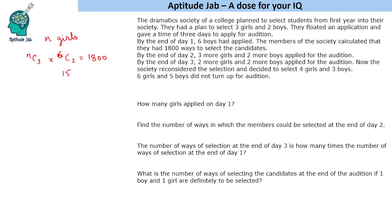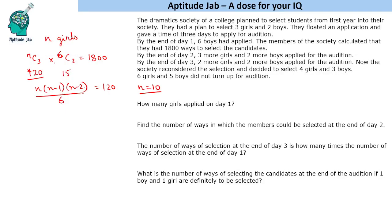6C2 is 15, so nC3 will be 120. nC3 is n(n−1)(n−2)/6 = 120, so n(n−1)(n−2) = 720. You will get n = 10. So the first question asks how many girls applied on Day 1, and the answer is 10 girls.